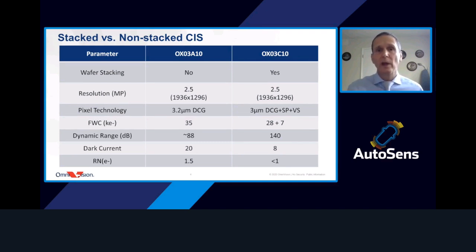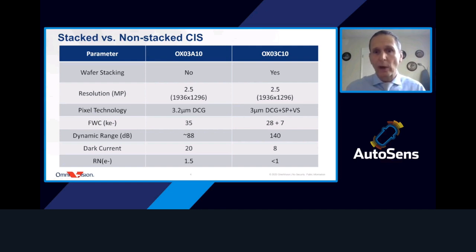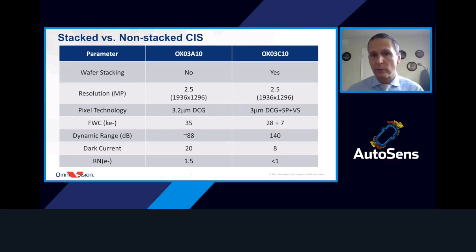To illustrate this, comparing stacked versus non-stacked CMOS image sensors: the OX03A is our older generation BSI device without stacking, and the OX03C is one of our newest devices using wafer stacking. Both are about 2.5 megapixels. Despite the OX03A having a 2.3 micron pixel versus 3 microns for the OX03C, wafer stacking allowed us to retain approximately the same full well capacity, expand dynamic range by about 50 dB, reduce dark current by more than a factor of two from 20 to 8 electrons per pixel per second, and reduce read noise by almost a factor of two from 1.5 electrons to less than one electron.